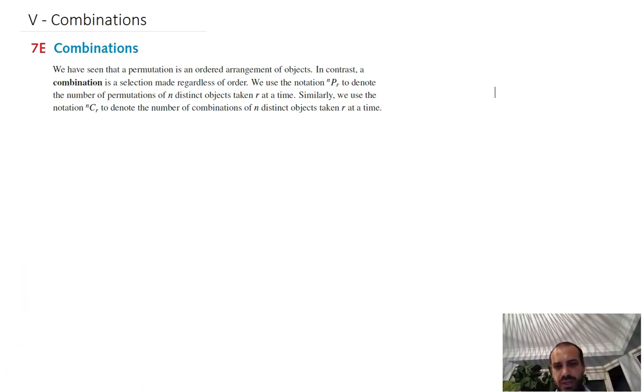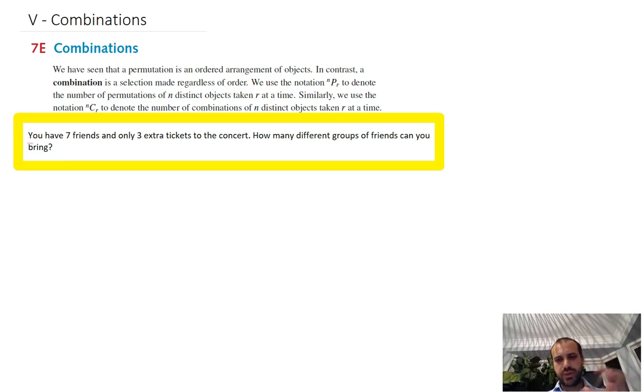That's when we're dealing with combinations. Classic question: You've got seven friends, but you've only got three extra tickets to some concert. You're going to go and you can pick three of your friends. How many different groups of friends can you bring? Obviously, it doesn't matter what order they're in. There's no seats. You're just bringing them into this concert with you. How many different groups of friends?